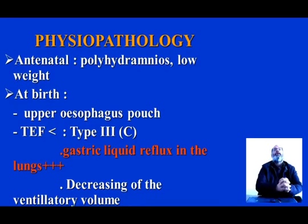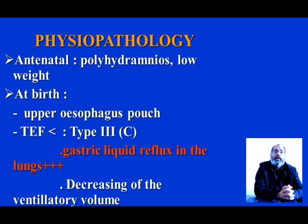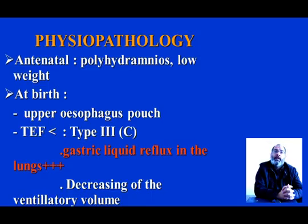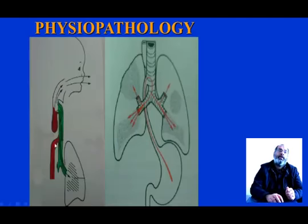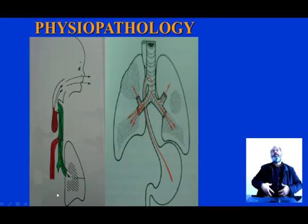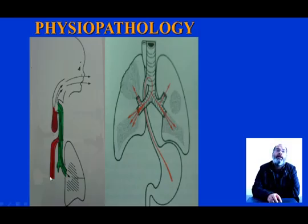Regarding physiopathology, we can have repercussions of oesophageal atresia in the antenatal period with polyhydramnios and low weight. At birth, signs related to the upper oesophageal pouch include especially aspiration danger. Signs are also related to the presence or absence of the lower tracheoesophageal fistula, which is Type C. In this case, we can have gastric liquid reflux into the lungs and a decrease in ventilatory volume. If a fistula is present in the lower pouch, air will pass into the intestine and we will have distension of the abdomen, which can compromise movement of the diaphragm.